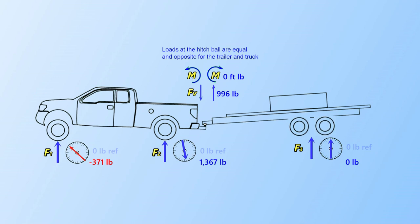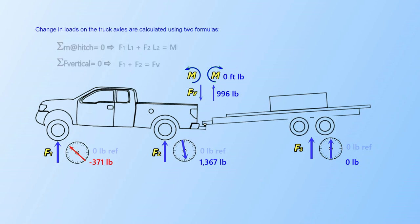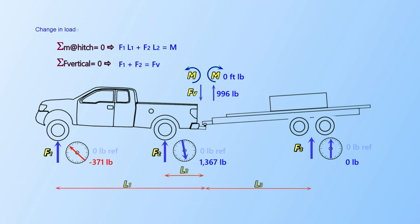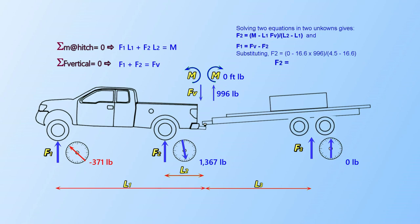It is also possible to calculate delta truck axle weights if we didn't have scales installed. This is done by using the principle that the sum of moments about any point are zero, here we use the truck hitch location, and the sum of vertical forces equals zero. This gives two equations with two unknowns. Solving, we calculate F2 equals 1367 pounds and F1 minus 371 pounds. Comparing these values to the scale readings, we see that our calculations are correct.